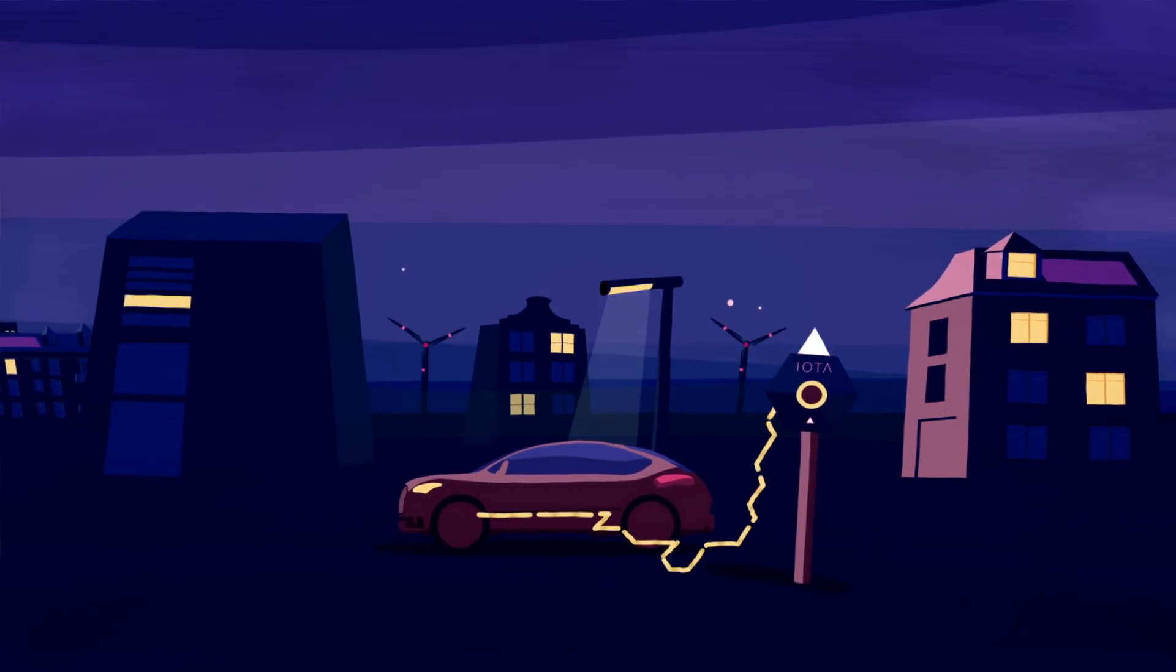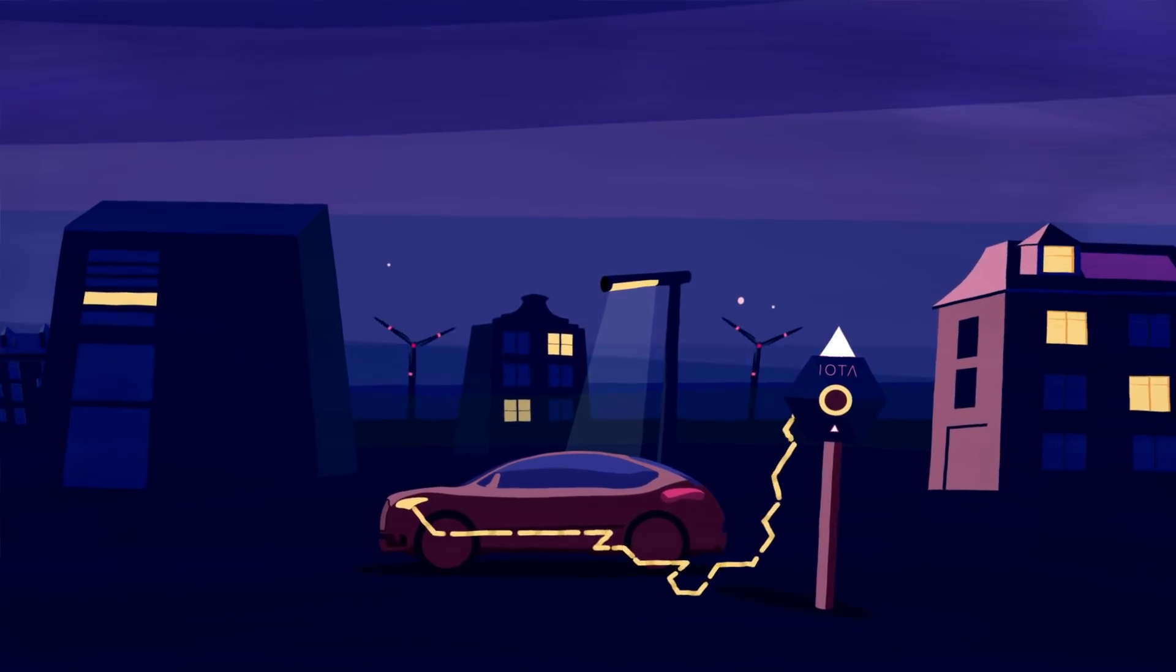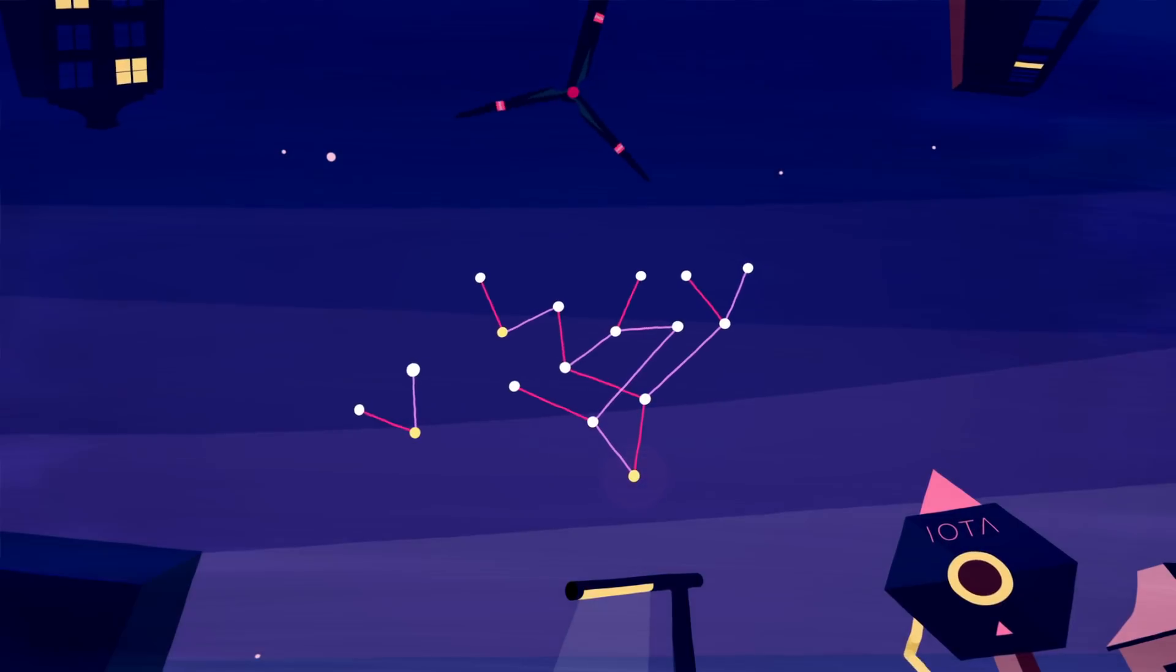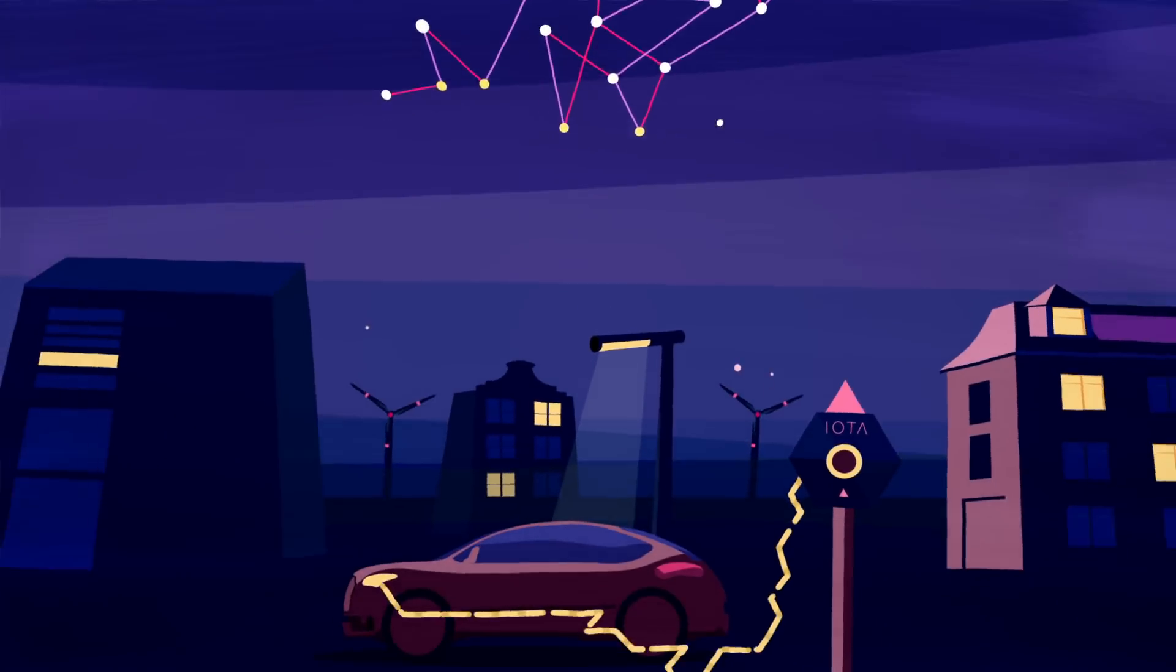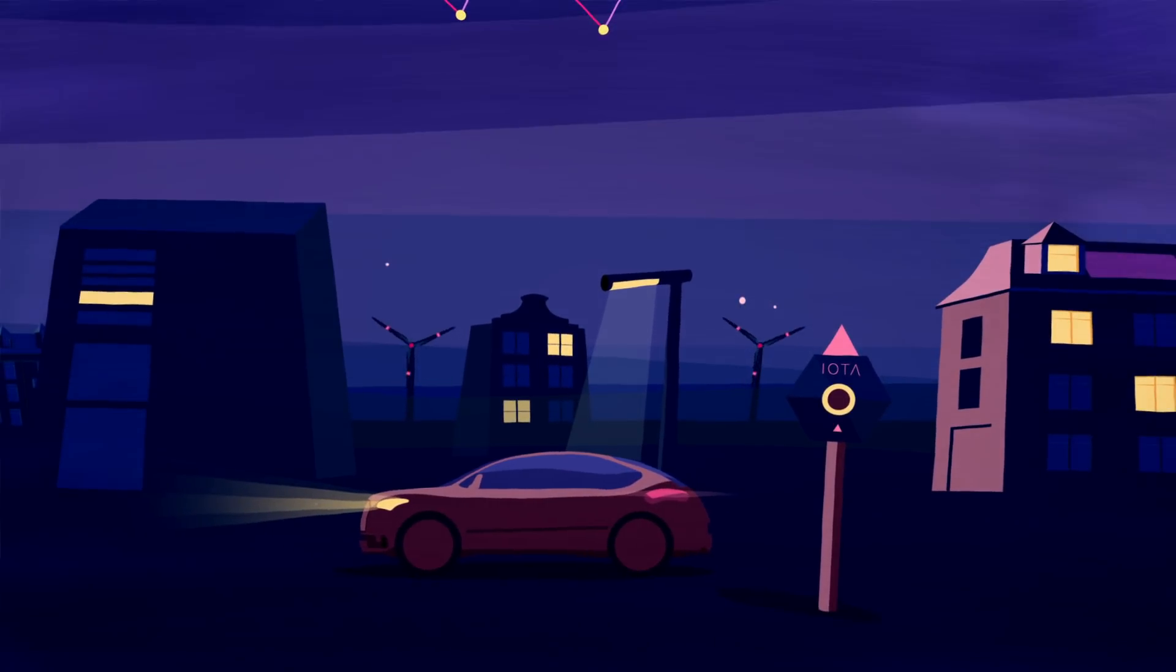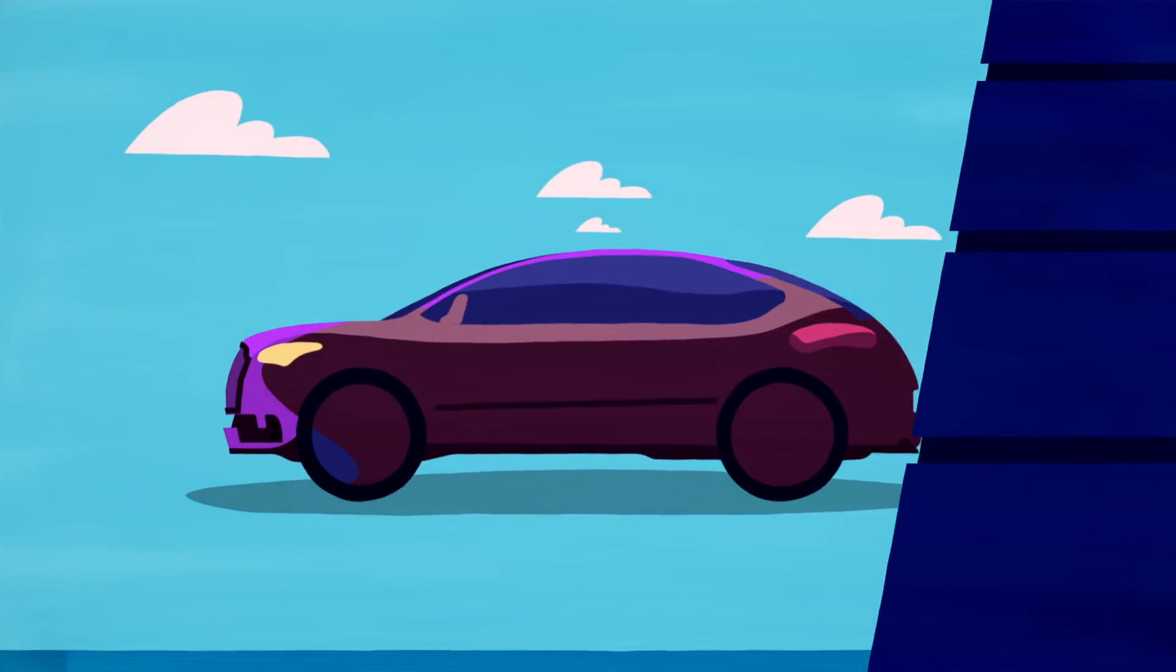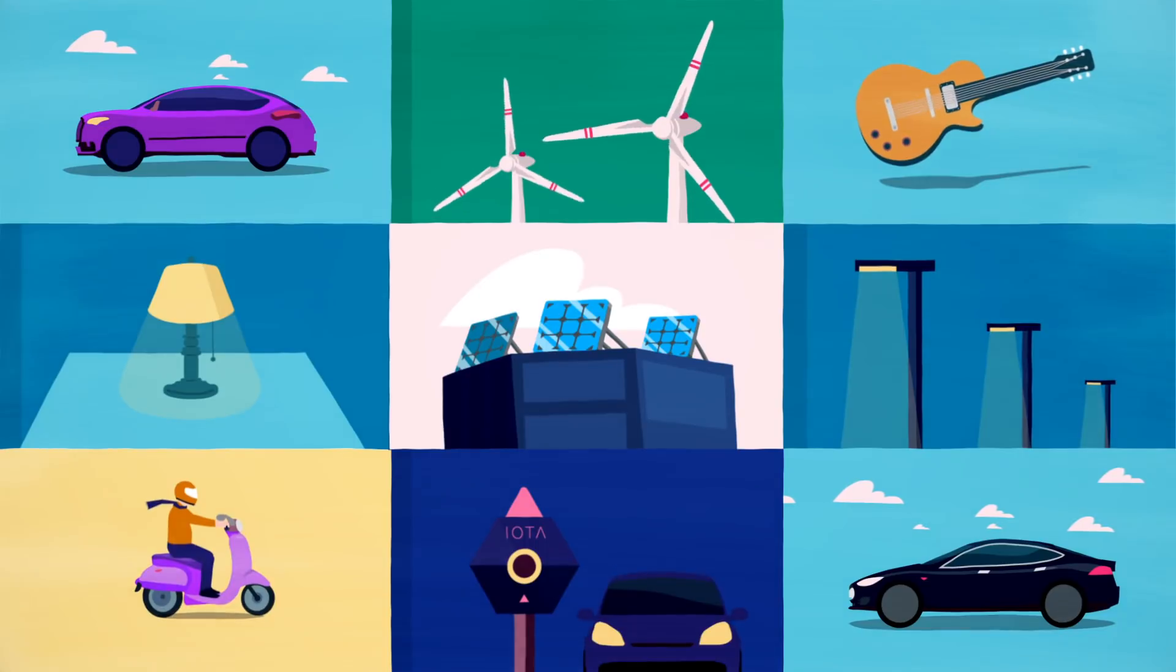To explore this possibility we've built an IOTA charging station prototype where you can use IOTA to pay and charge. No need for a card or subscription. When connecting cars, solar panels and windmills to the IOTA network, all these devices will be able to sort out the transactions and their related payments themselves.